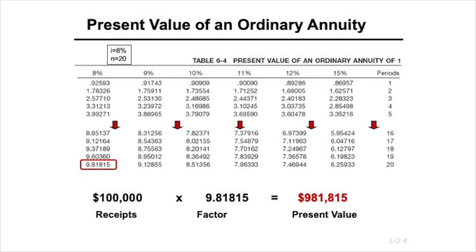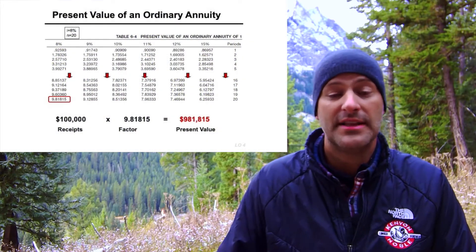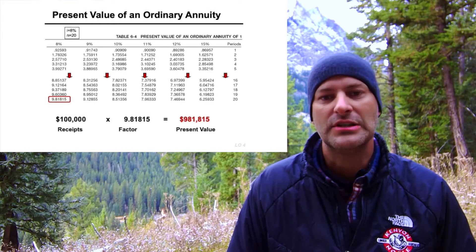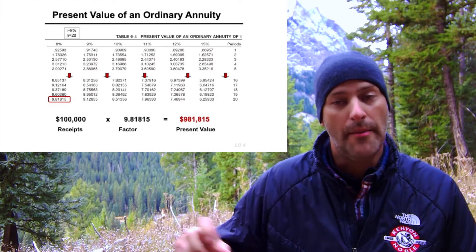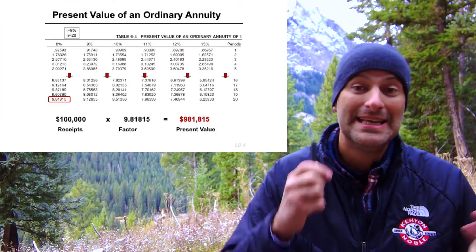Using our table with twenty periods at eight percent, our factor is 9.818. We multiply that times one hundred thousand dollars, and the present value of that two-million-dollar stated lottery payout is actually only nine hundred eighty-one thousand dollars today. Another way to think about it: if you took nine hundred eighty-one thousand dollars today and invested it at eight percent, you could withdraw a hundred thousand dollars at the end of every period for the next twenty years and end up with zero — the same as taking all the future payments.